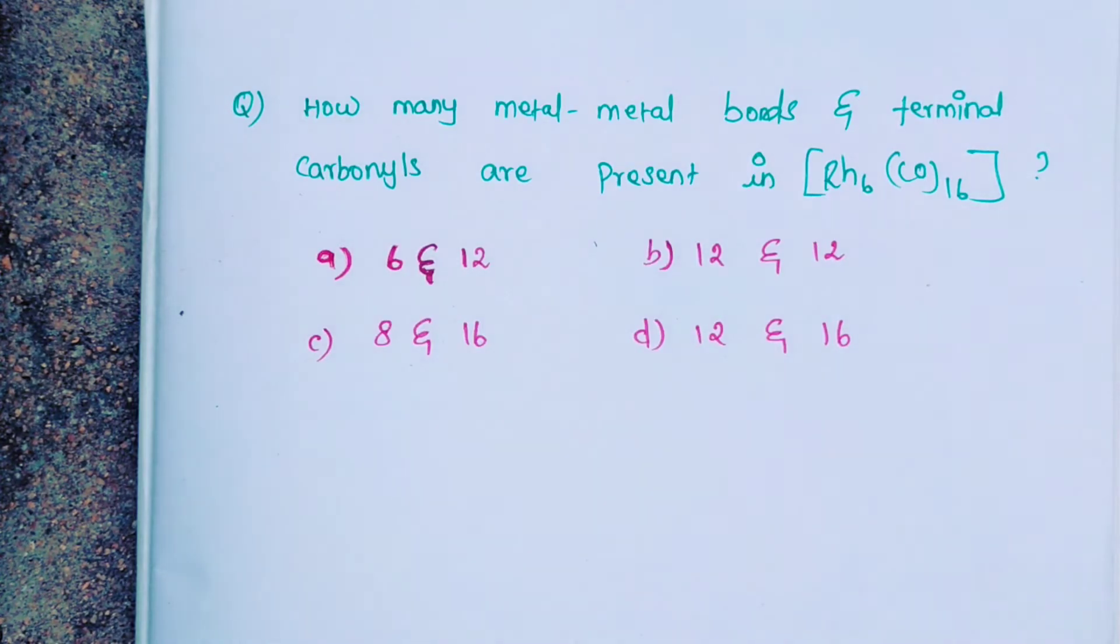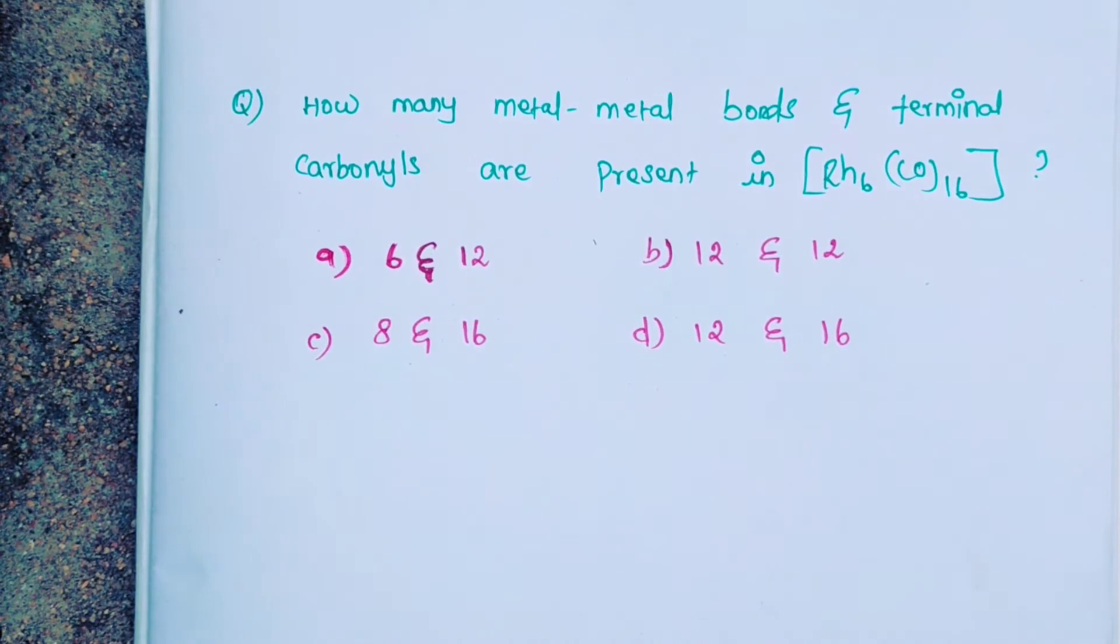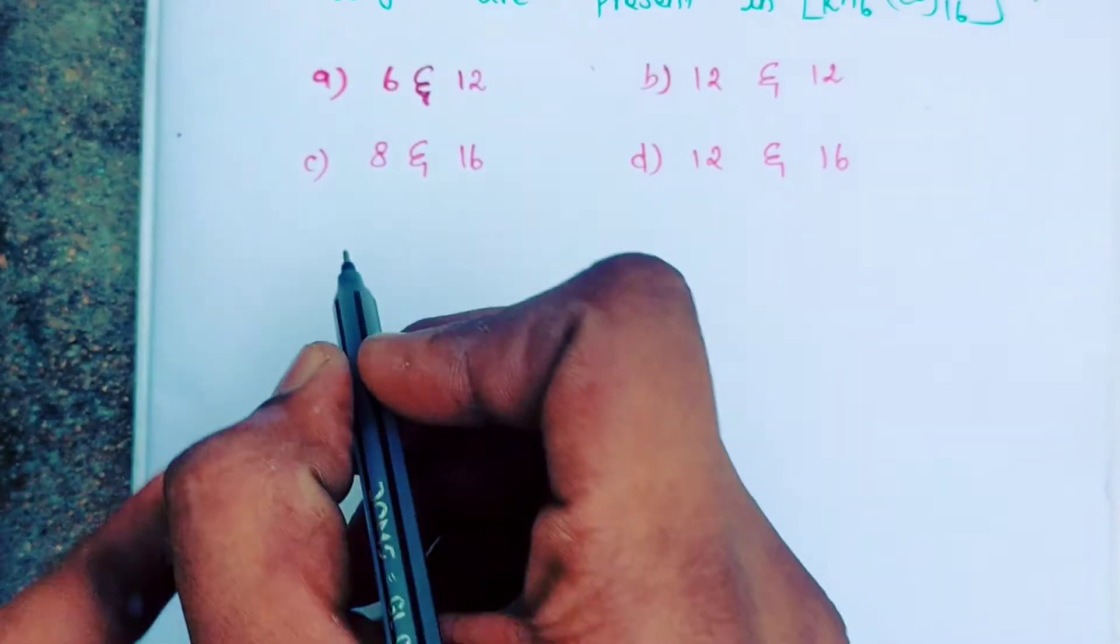In our classes, we have two references for Organometallic Chemistry: Ajay Kumar and B.D. Gupta. If you refer to the books, this question is easier to answer. First, we have to find out the metal-metal bonds, then we will discuss terminal carbonyls. Let's write the formula for metal-metal bond calculation.